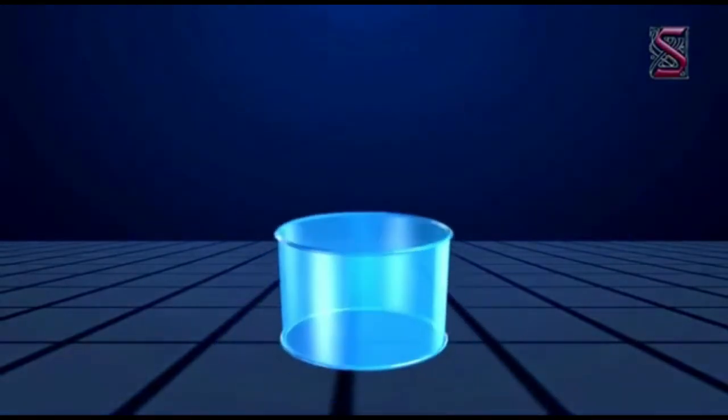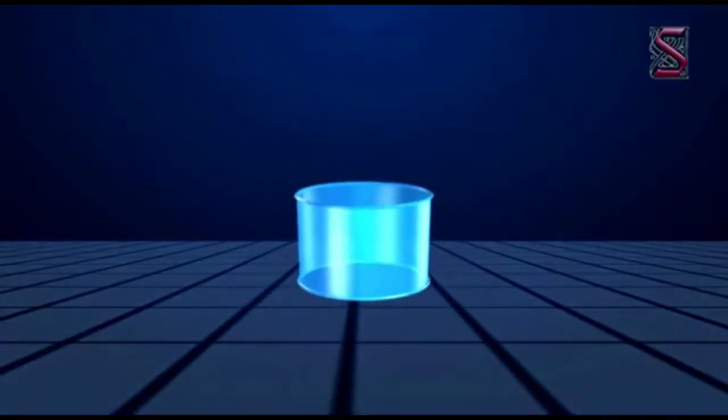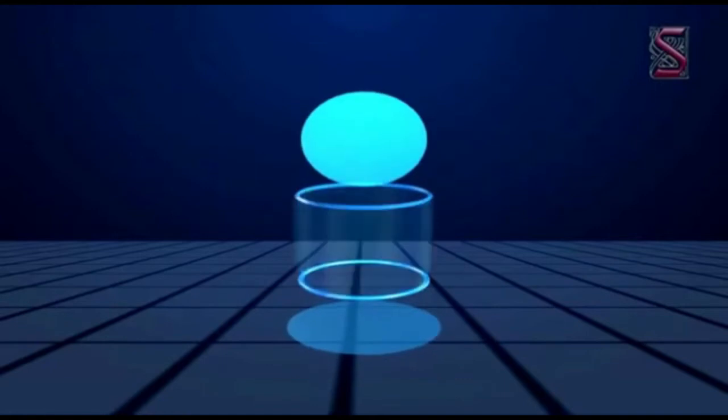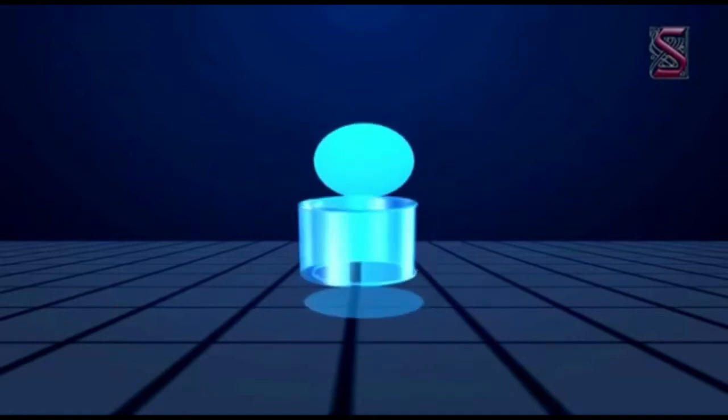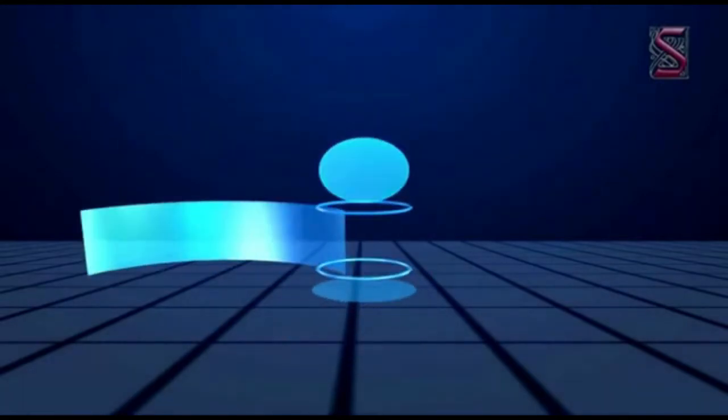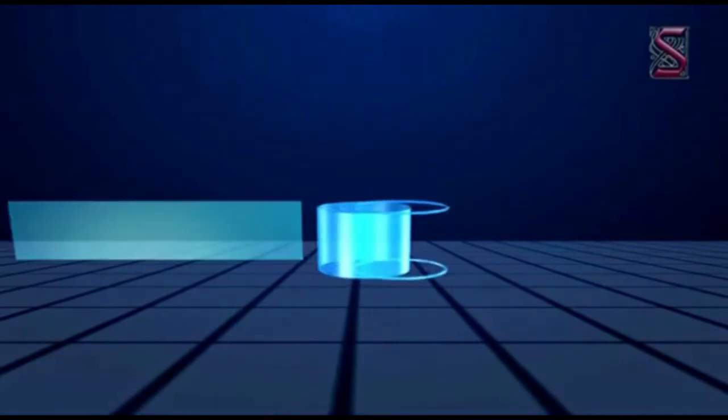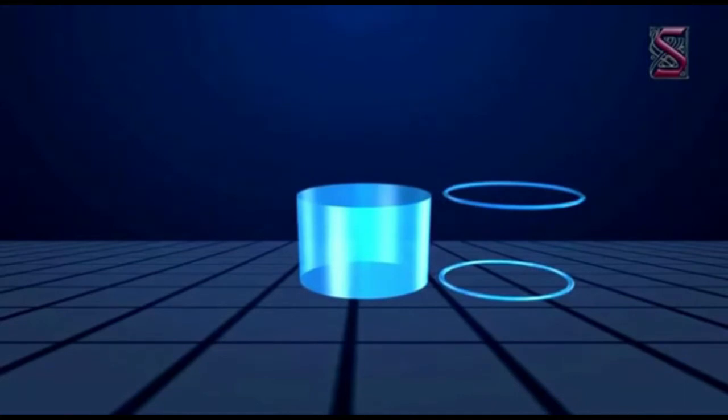A cylinder has no vertex, two circular faces, one curved rectangular face, and two curved edges.